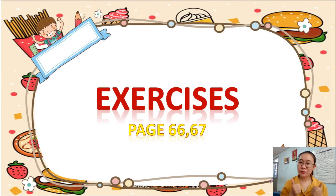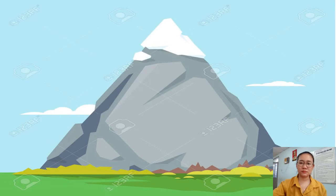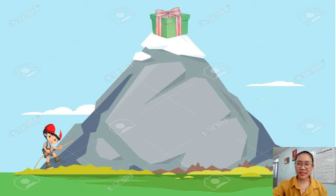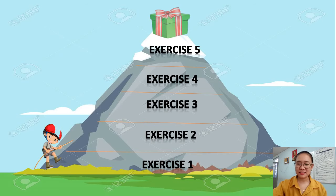Now we are ready to do some exercises. Take out your student book and open to pages 66 and 67. Are you ready? Now look at the picture — it is a high mountain, and on the top we can see a big present. To open the big present, you must pass five exercises. Are you ready? Yes, let's go!